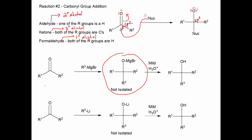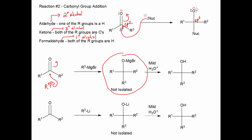Let's look at the mechanism. Taking some creative license, the Grignard acts as a carbanion doing a nucleophilic addition. We'll find later there are a couple of cases where this carbanion analogy doesn't work, but for the most part it works nicely.